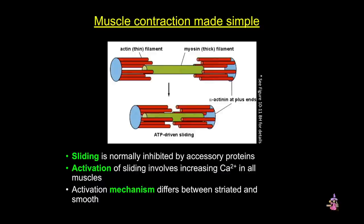All muscle cells contract by a sliding filament mechanism that involves interactions between actin, or thin filaments shown here in red, and myosin, or those thick filaments shown here in green. These interactions are driven by increasing calcium levels and ATPase activity, but the activation mechanism differs between striated and smooth muscle.